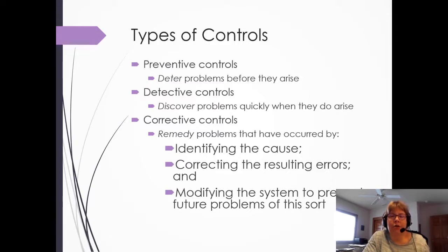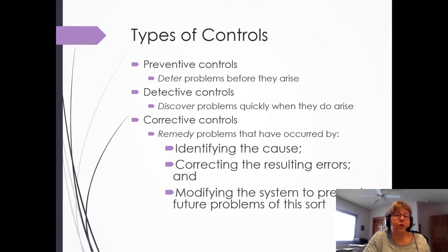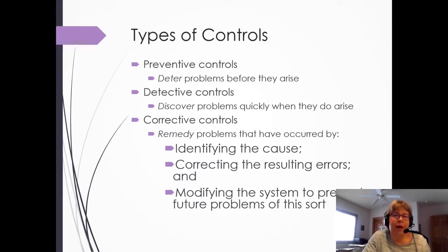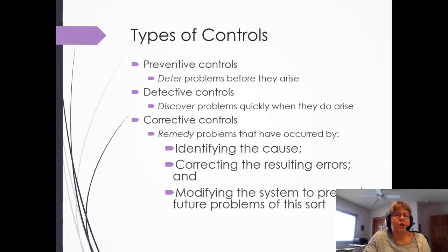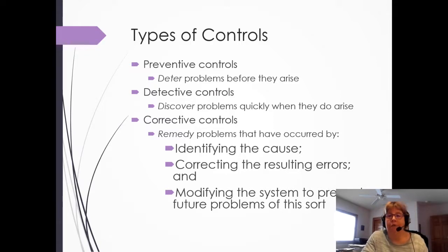There are three main types of controls, and each plays a different role. The best control system uses a combination of all three. First are preventive controls — these help make sure a problem doesn't happen and deter it from occurring. From a fraud triangle perspective, we are taking away opportunity. We can also protect from data entry errors; for example, a zip code should always be five digits, so we can put in controls to prevent someone from entering four digits or accidentally including a letter.